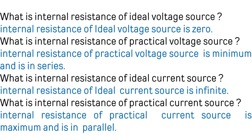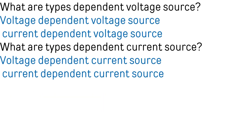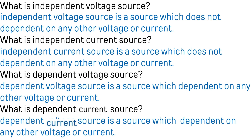What are the types of sources? Independent sources and dependent sources. What are the types of independent sources? Independent voltage source and independent current source. What are the types of dependent sources? Dependent voltage source and dependent current source. What are the types of dependent voltage sources? Voltage dependent voltage source and current dependent voltage source. What are the types of dependent current sources? Voltage dependent current source and current dependent current source. The dependent sources are represented in a rhombus shape.